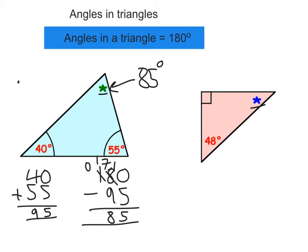Let's go on to the second example. Now what you need to remember here is that this box here means that this is a right angle, i.e. it's 90 degrees.